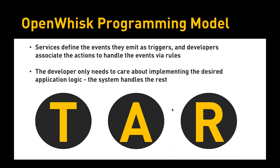Services basically define the events they emit as triggers and developers associate the actions to handle the events by rules. If you are getting started with OpenWhisk, you need to care about three things: the first one is called a trigger, the second one is called an action, and the third one is called a rule. You need to really understand what these three stand for and how they become the building blocks of OpenWhisk. As a programmer you will only focus on these three aspects. Of course there are other things like packages, feeds and sequences, but I'll save them for the next webinar. Let's take a closer look at each of these building blocks.